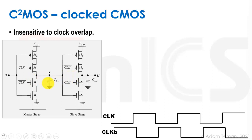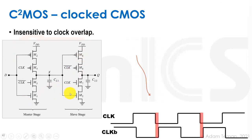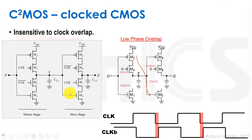Basically, if we connect the clock and clock bar oppositely, we have a dynamic type of latch where we put the master stage into tri-state during one clock edge, and the slave stage into its opaque, enclosed tri-state position in the other phase. So basically if we have an overlap on the low phase, what happens is that we make a situation where we cannot have a feed-through path.